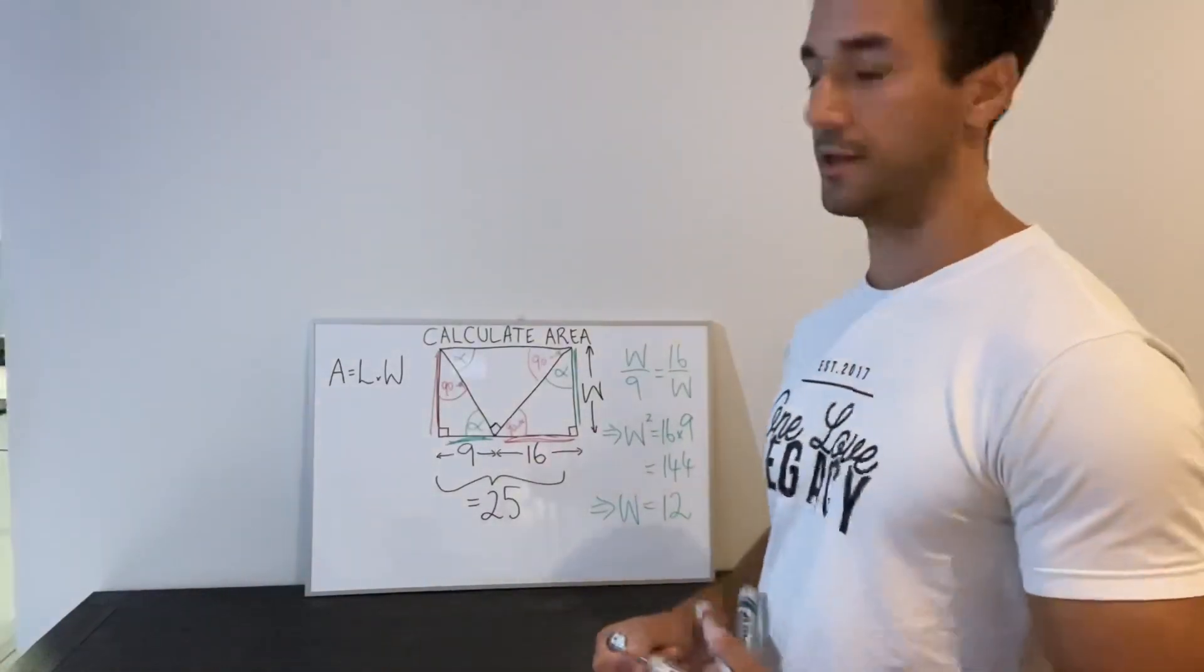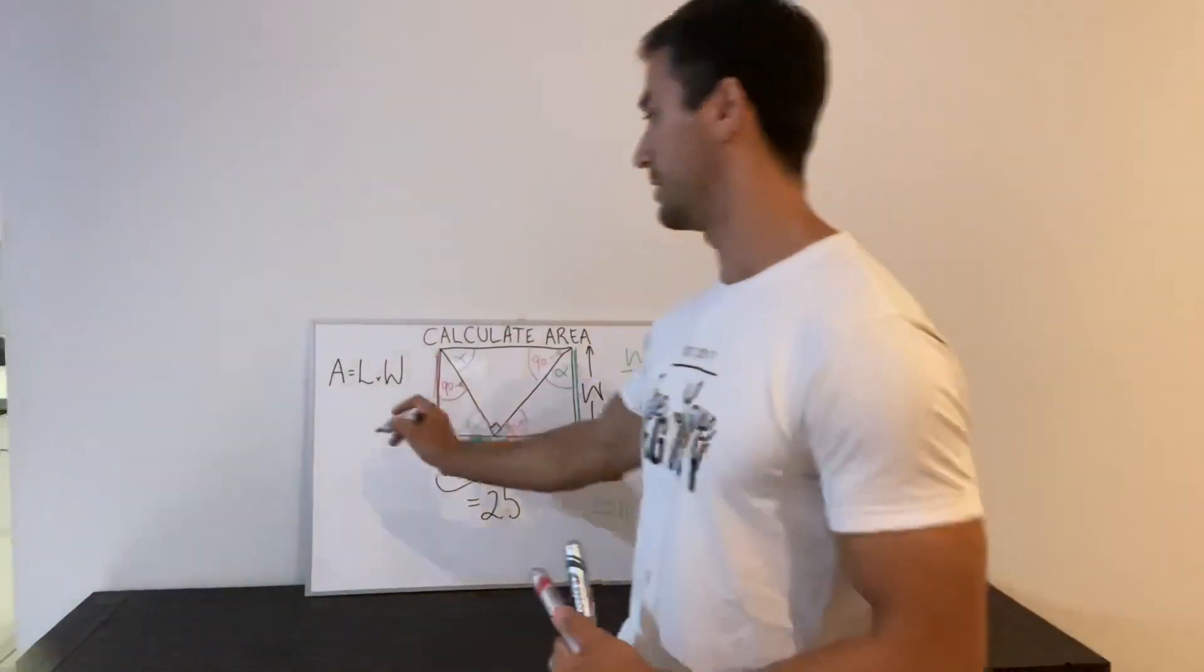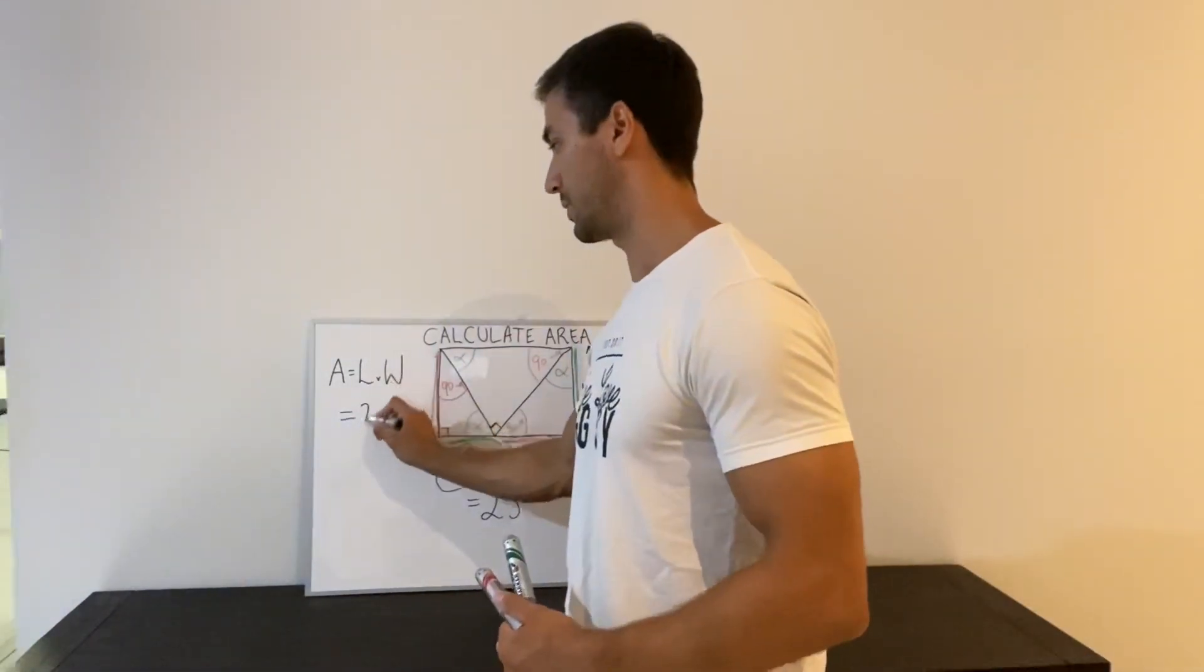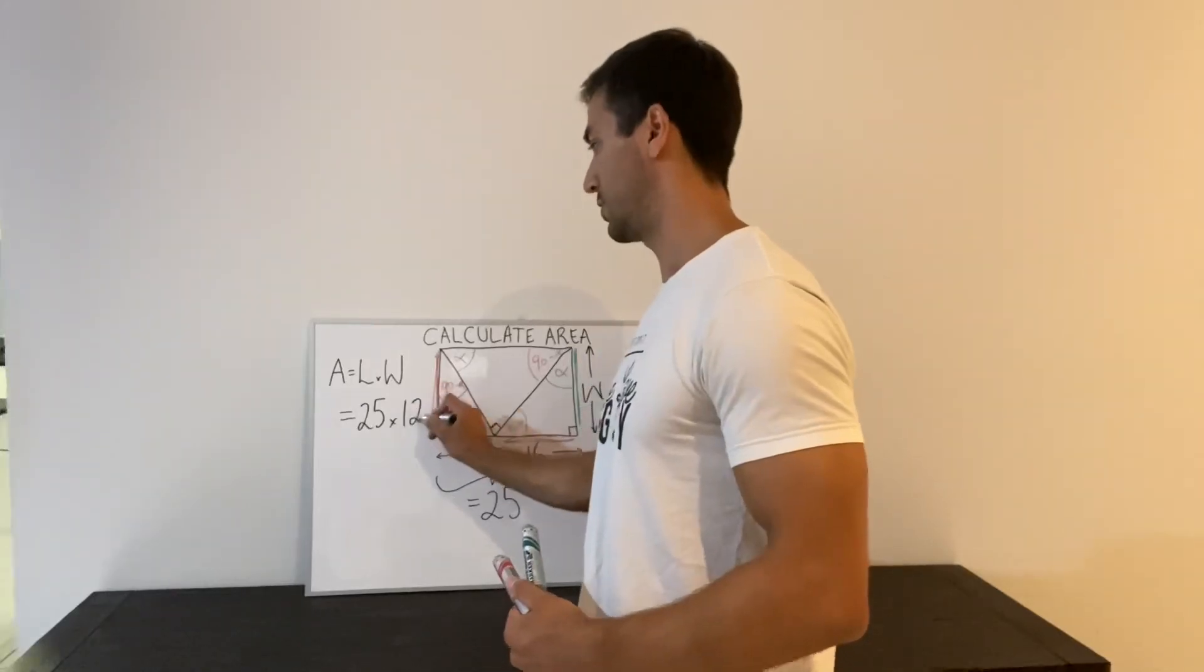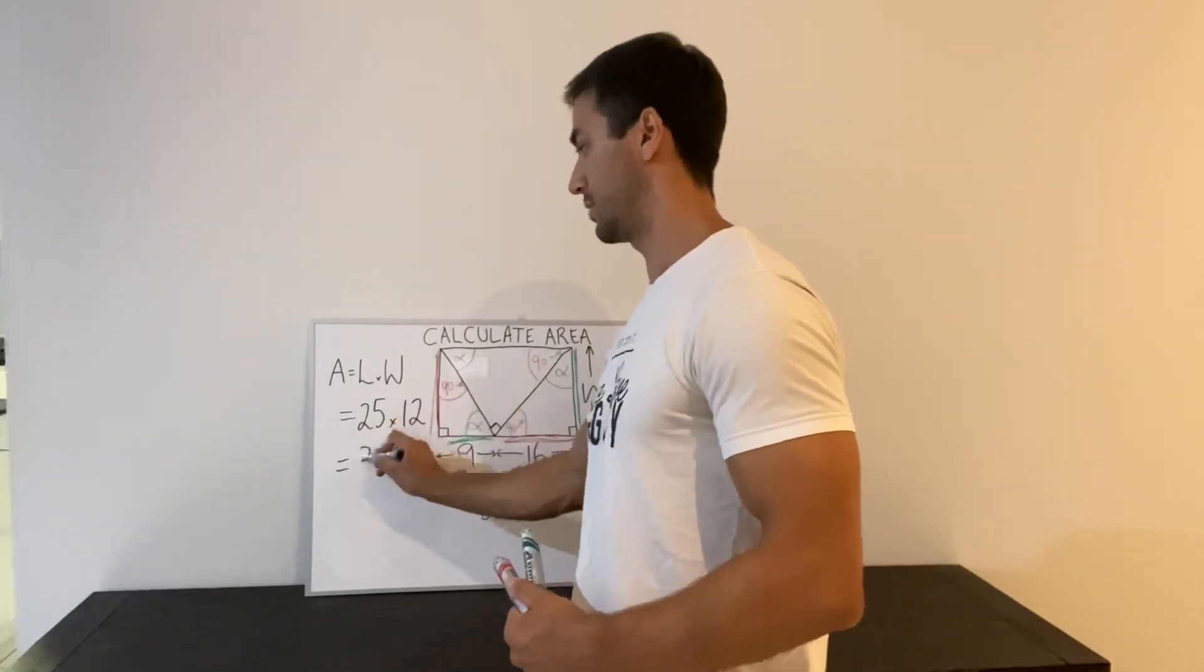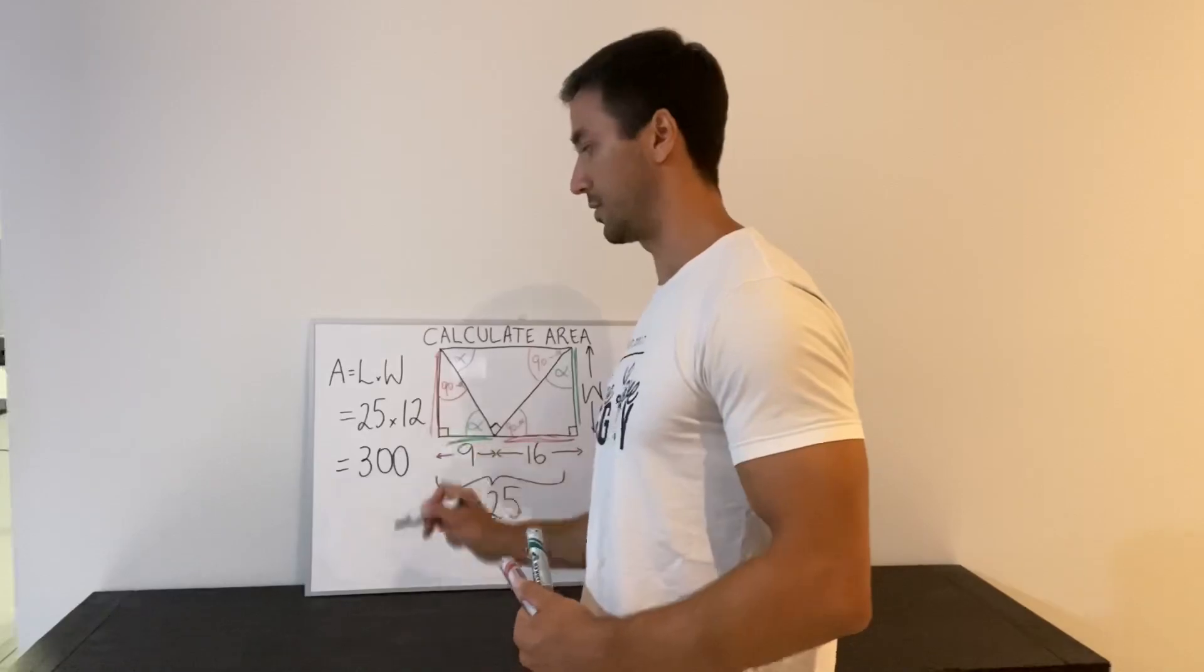Alright, so now we know our widths and we can work out the area. So our length is 25 and our width is 12. And so multiplying those together we get that the area is 300.